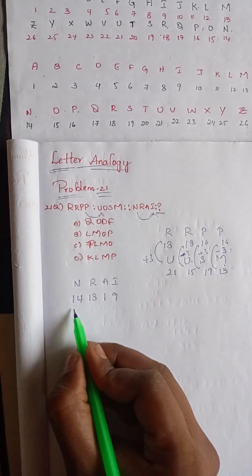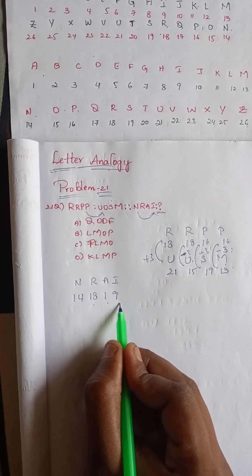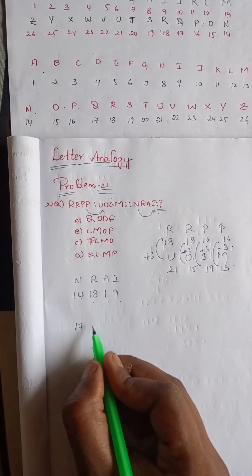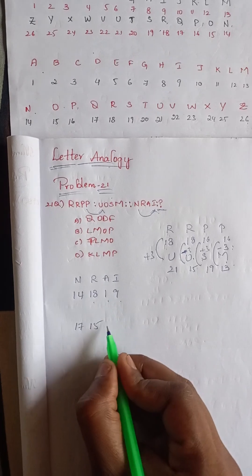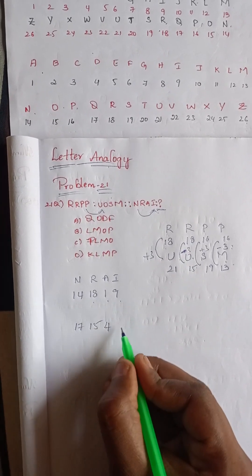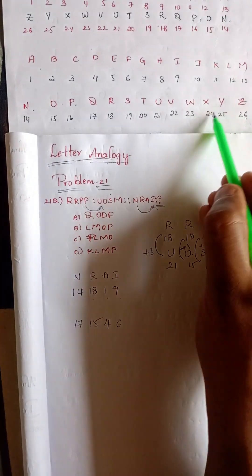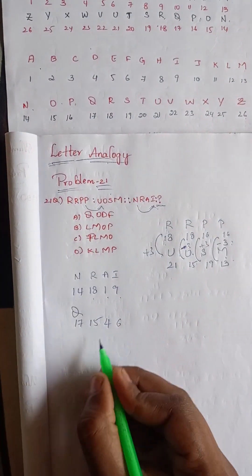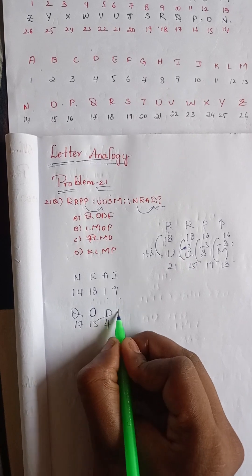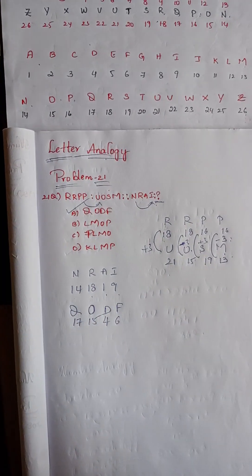Apply the same logic here. N R A I is 14, 18, 1, 9. Plus 3 means 17. Minus 3 means 15. 1 plus 3 means 4. 9 minus 3 means 6. 17 is nothing but Q. 15 is nothing but O. This is D and this is F. Option A is the correct answer.